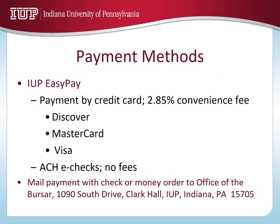The Bursar's office accepts payments in person with cash, check money orders, and cashier's checks. The office also accepts electronic checks and credit cards — Visa, Discover, and MasterCard. If paying with a credit card, there is a 2.85% convenience fee; however, there is no fee for electronic checks. Check payments can also be mailed into the Bursar's office.